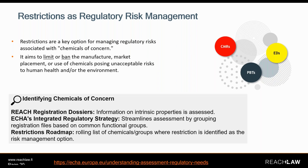ECHA has streamlined how it does this assessment in its Integrated Regulatory Strategy, I think since 2019. Nowadays chemicals are grouped based on common functional groups like bisphenols or phthalates, and the assessment and any recommendations for risk management may be applied to the group of chemicals rather than individual chemicals. You can find lists of chemicals flagged for restriction in the Restriction Roadmap published by the Commission, which gives a rolling list of chemicals where restriction is identified as a possible risk management option.